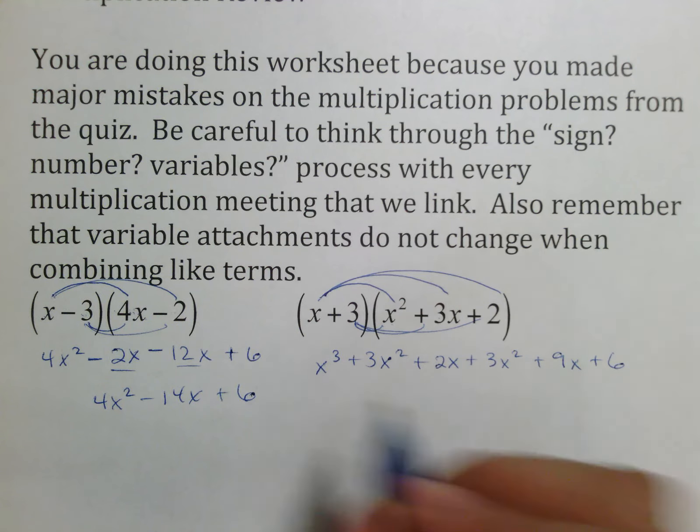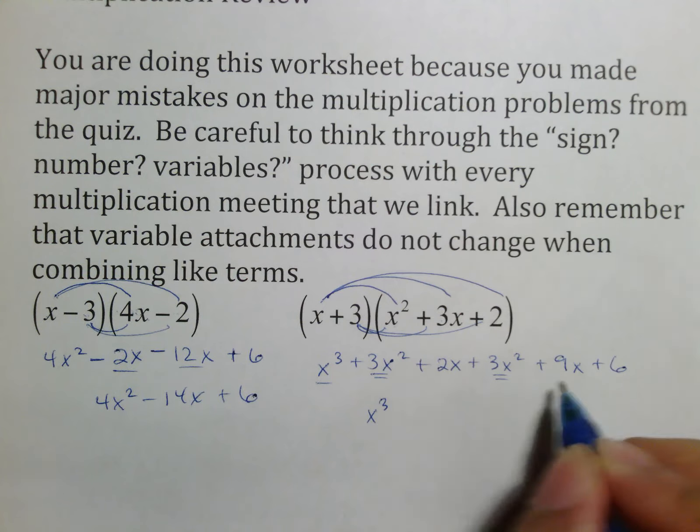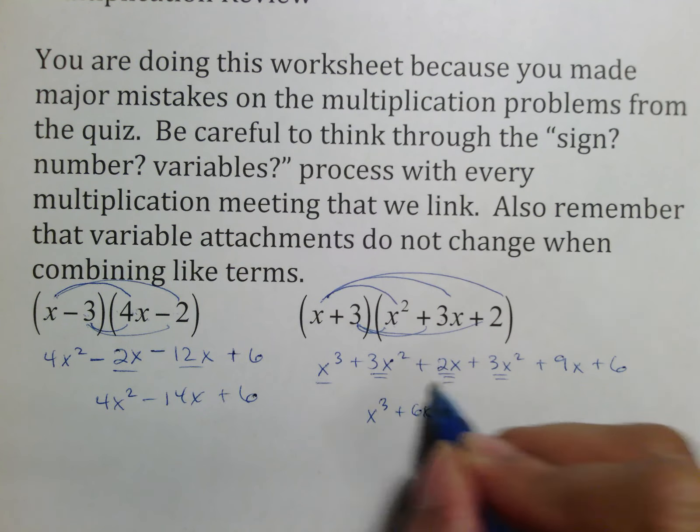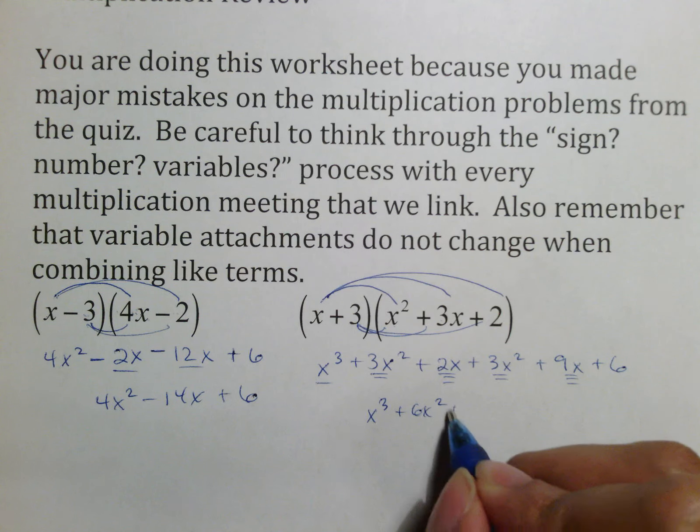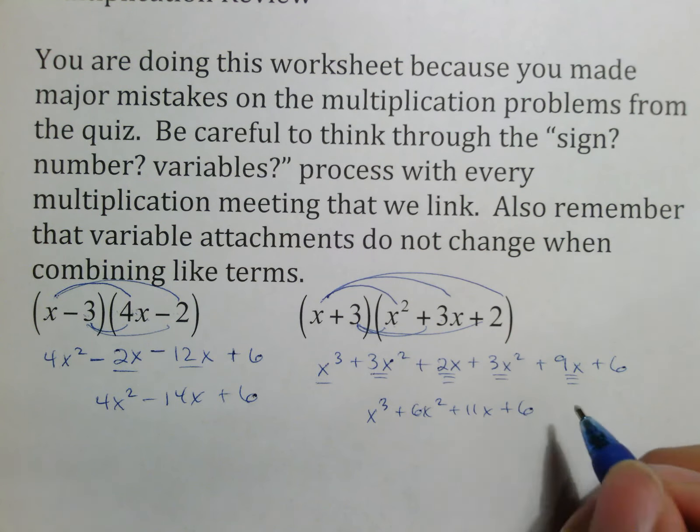And again, now you simply combine like terms and please do not change your labels. x to the third comes down. 3x squared goes with 3x squared to make 6x squared. 2x goes together with 9x to make 11x. And then plus six is there for you to wrap that up.